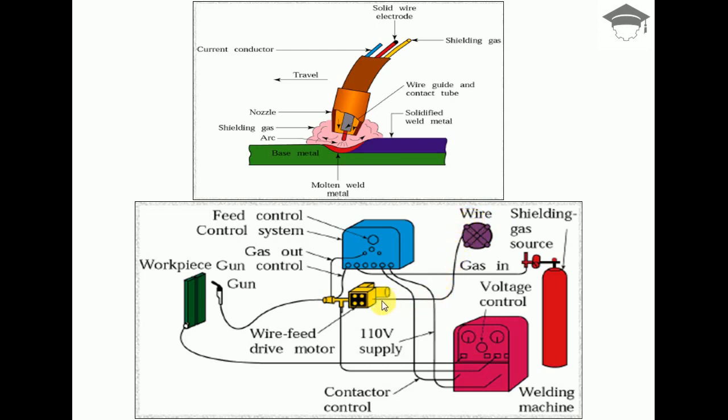It actuates using the feed control system. This is where we set the particular speed or feed rate of the wire. This machine gives the signal to the wire feed drive motor which pulls the wire. The wire is pulled into the gun.